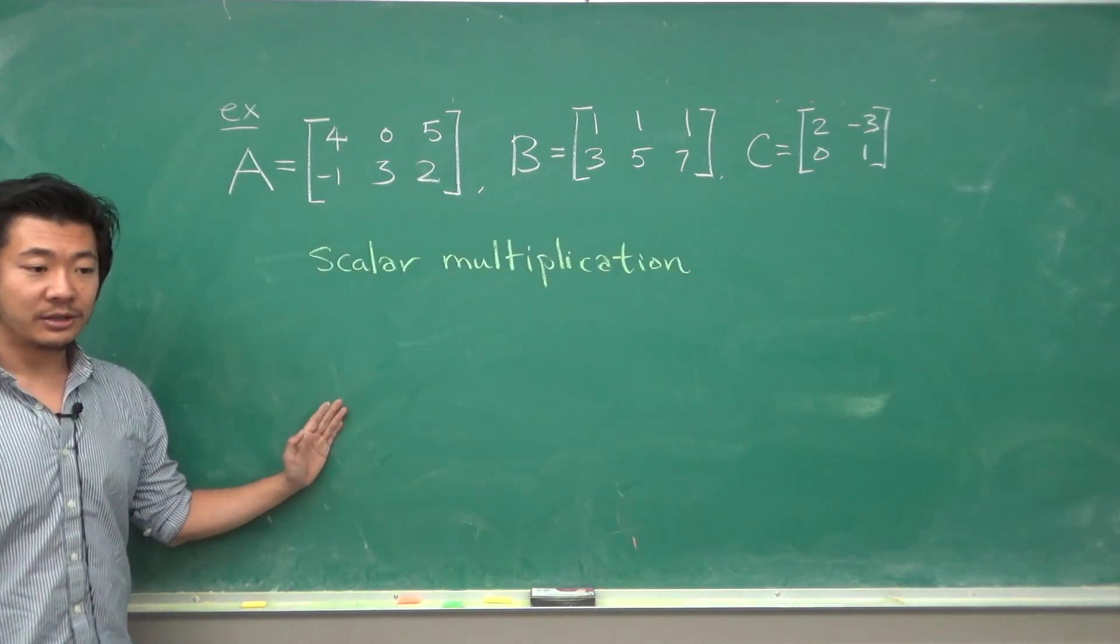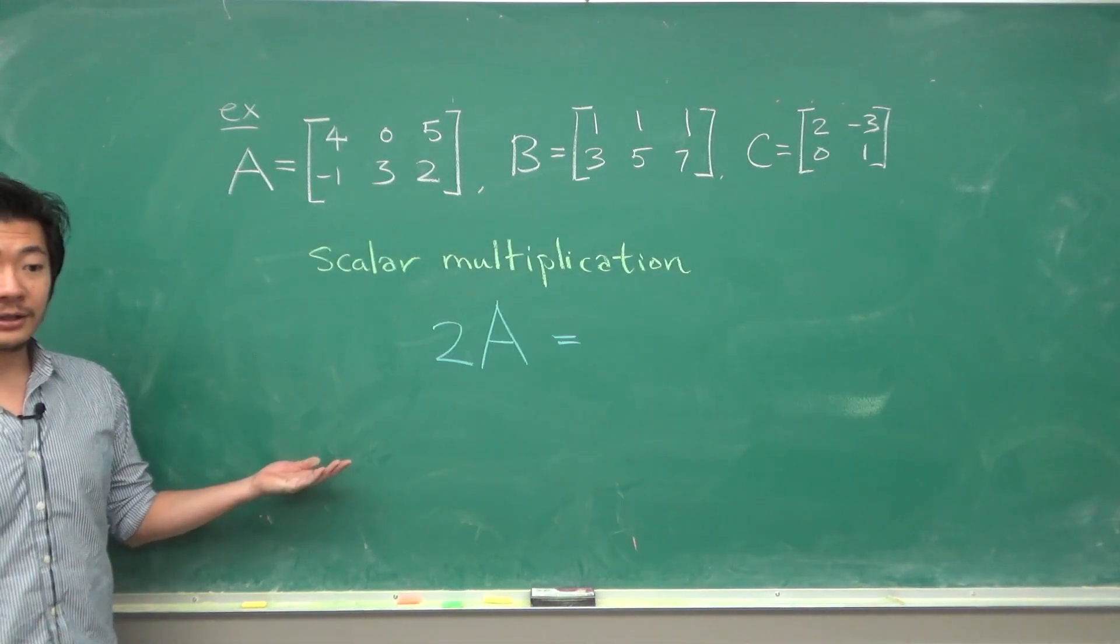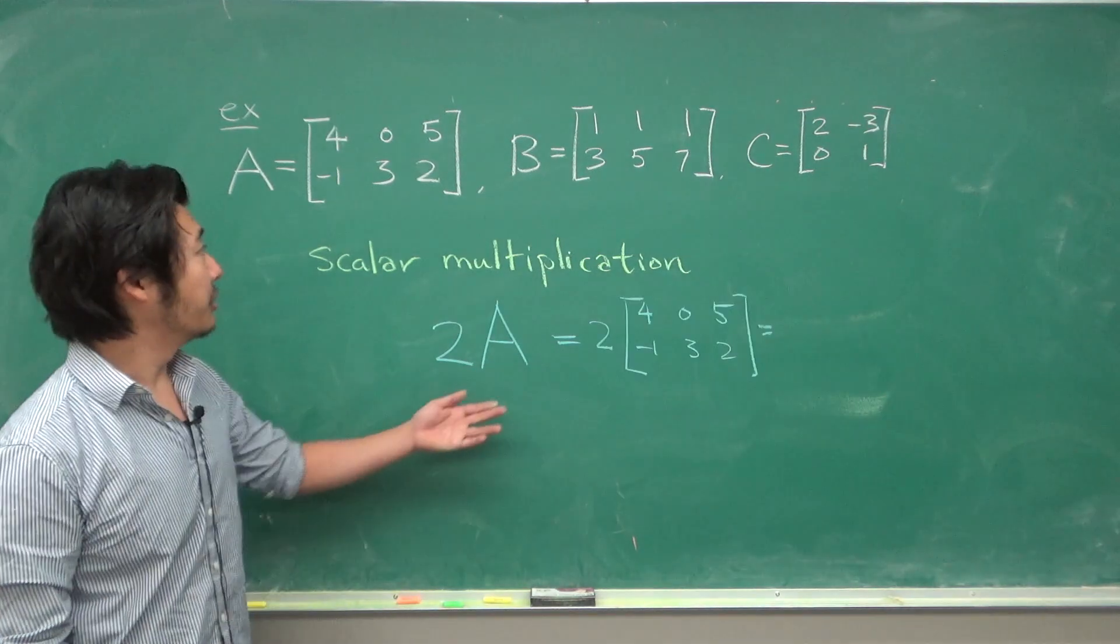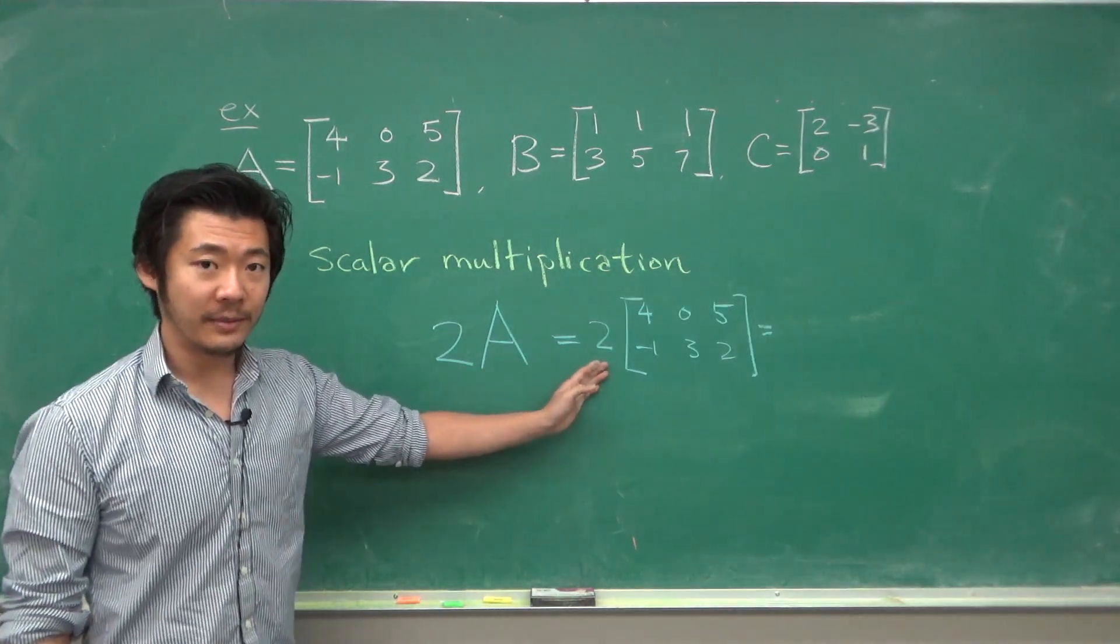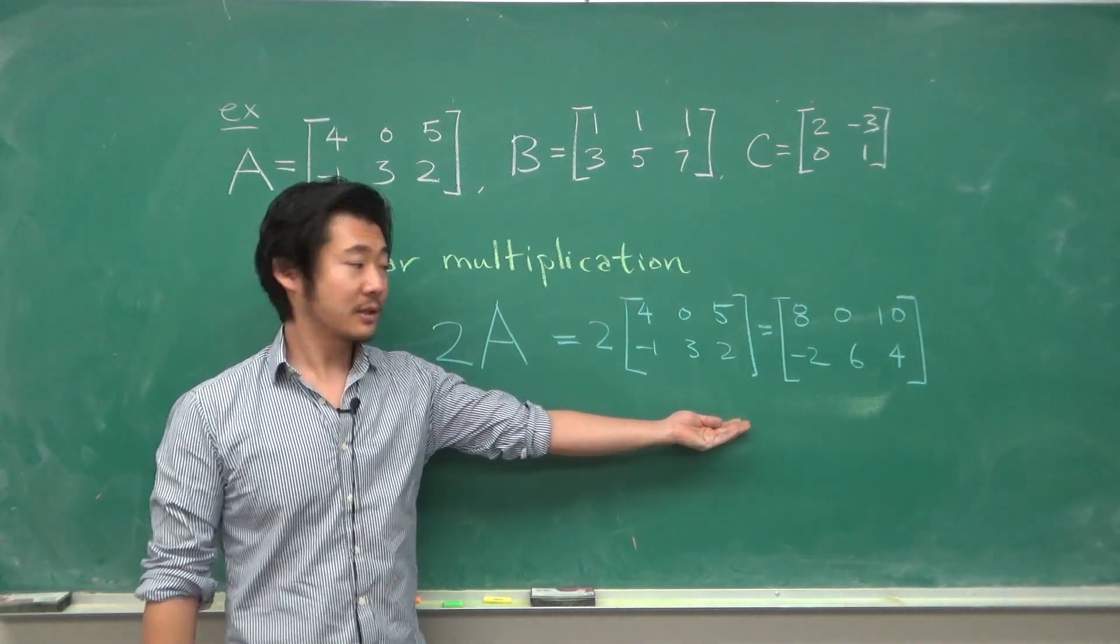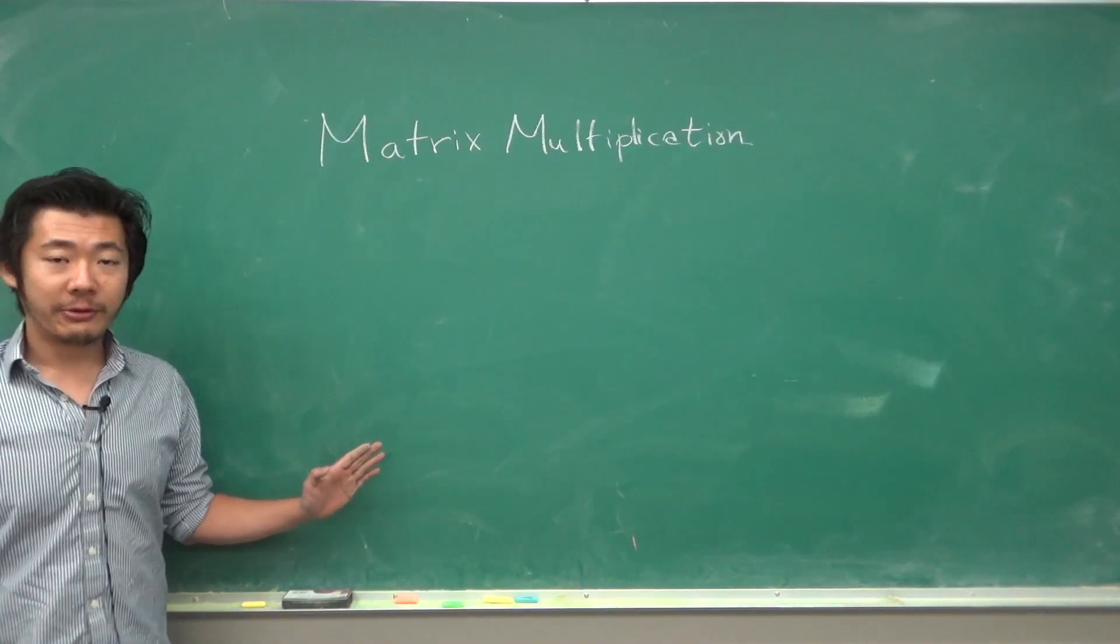We can define a scalar multiplication of the matrix. For instance, 2 times A would be multiplying this scalar to each component of this matrix, and we will get a matrix like this.